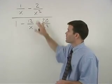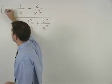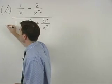So to get rid of all of our little fractions, we multiply top and bottom of the complex fraction by x squared.